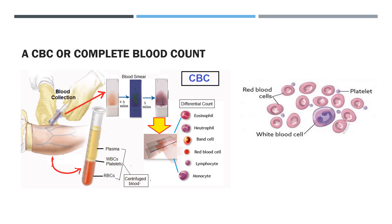Talking about the CBC or complete blood count, we need to know the elementary portion of this — what exactly does the CBC represent? It is collected through a venipuncture or blood draw. It can be collected by the nurse or by the lab. Either way it makes its way to the laboratory, is collected in a vial, and then put into a centrifuge. As it spins, the centrifuge separates what is in the vial — plasma, white blood cells, platelets, and red blood cells — through weight and gravity.